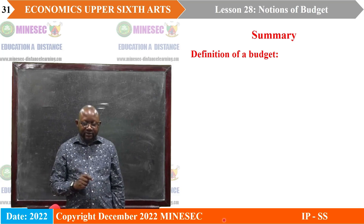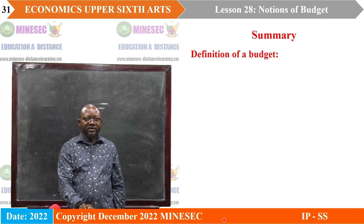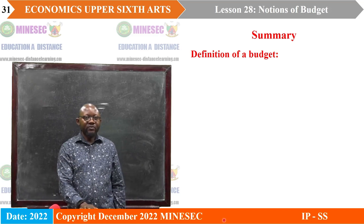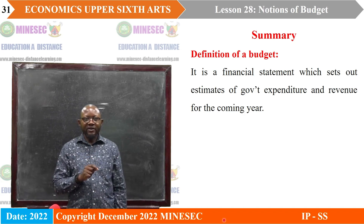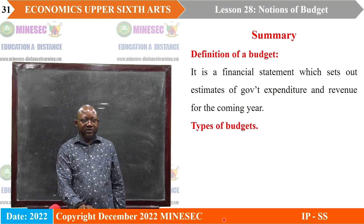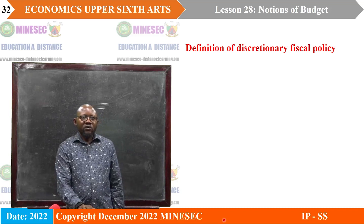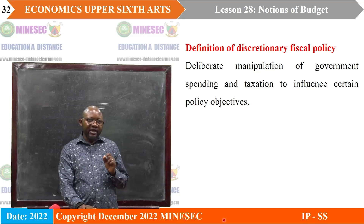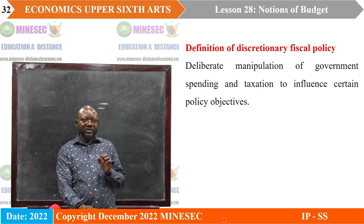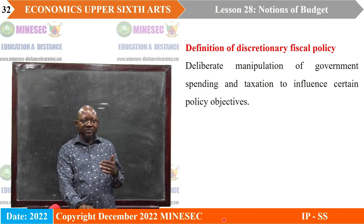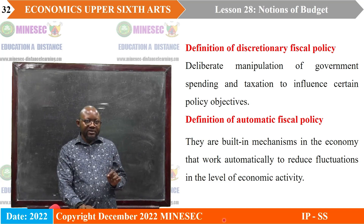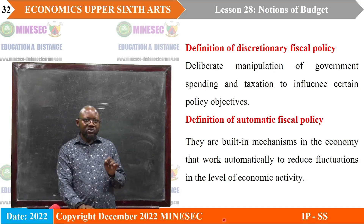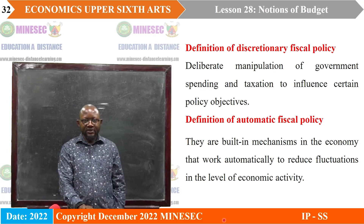Now we are at the summary, recalling all we've done in this lesson. We started with the definition of a budget — a financial statement which sets out estimates of government expenditure and revenue for the coming year. Then we looked at the three types of budget: budget surplus, budget deficit, and balanced budget. We looked at discretionary fiscal policy — a deliberate manipulation of government spending and taxation to influence certain policy objectives such as full employment, price stability, and steady economic growth. And automatic stabilizers — built-in mechanisms in the economy that work automatically to reduce fluctuations in the level of economic activity.